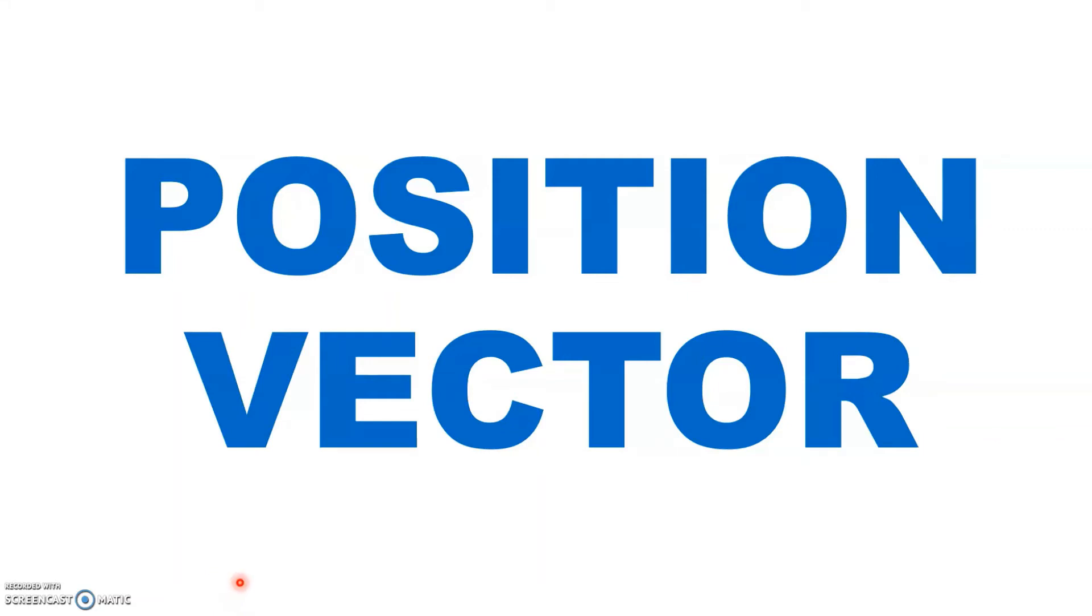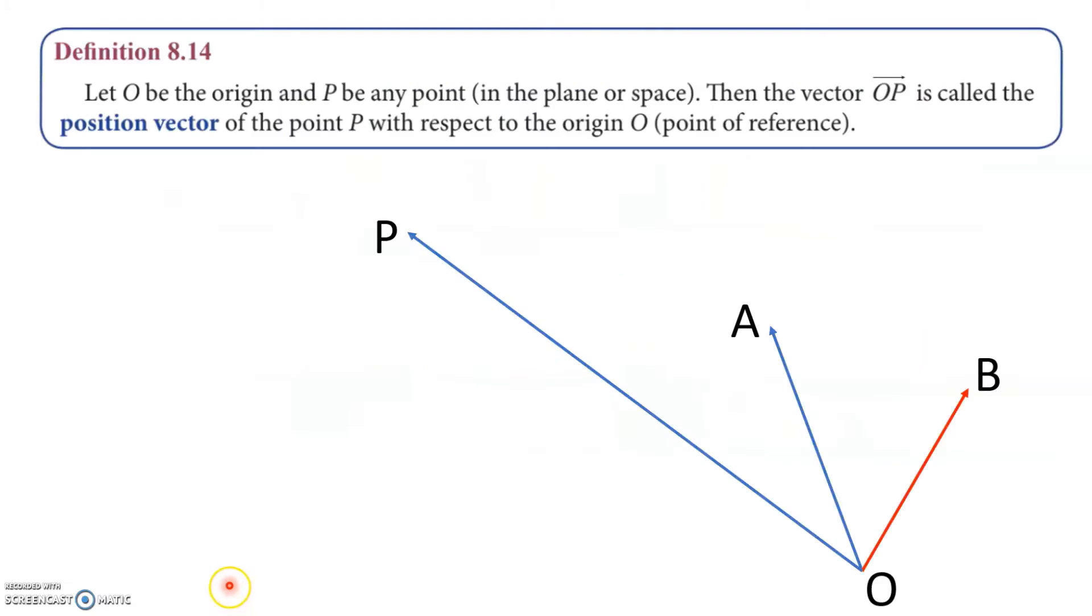In this video we will define what is the position vector. Let's consider O to be the origin and we have vectors starting from O, which is the origin.